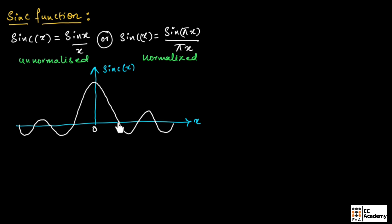The point where the signal is exactly on the x-axis is called a zero crossing. Wherever the waveform meets the x-axis, we call that a zero crossing. These points can have integer values for the normalized sinc function, and can have values in terms of π, 2π, 3π, 4π and so on for the unnormalized sinc function. On the negative side, it can be minus π, minus 2π, minus 3π and so on.